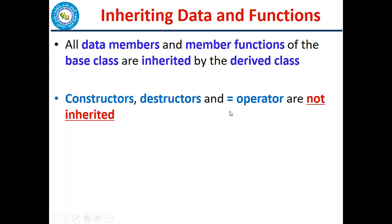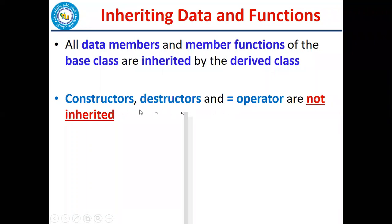The base class constructor, destructor, and assignment operator are inherited, but their use doesn't mean the derived class doesn't need its own. The parent class had two or three data members; the derived class added two or three more. If you use the base class constructor, only those original members will be initialized, and the destructor will only deallocate those. In that case, these three functions will have to be written in the derived class, and overriding can be done.